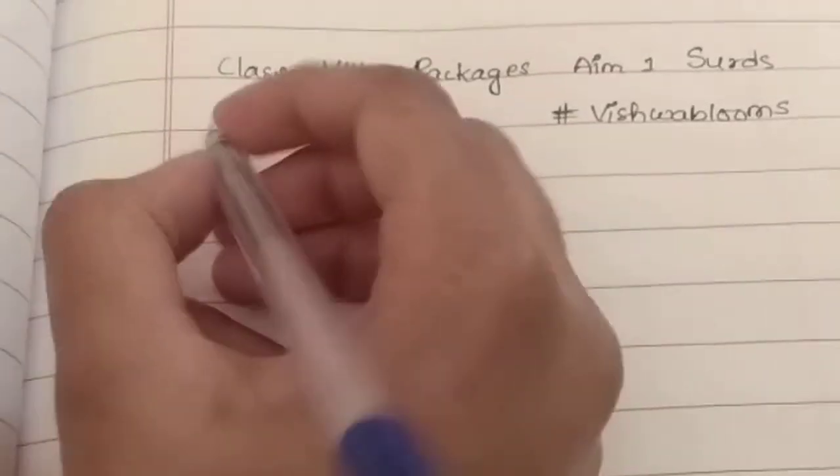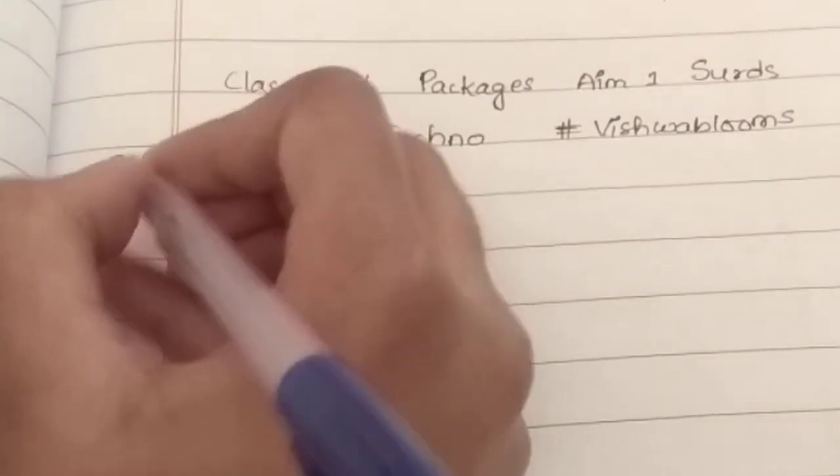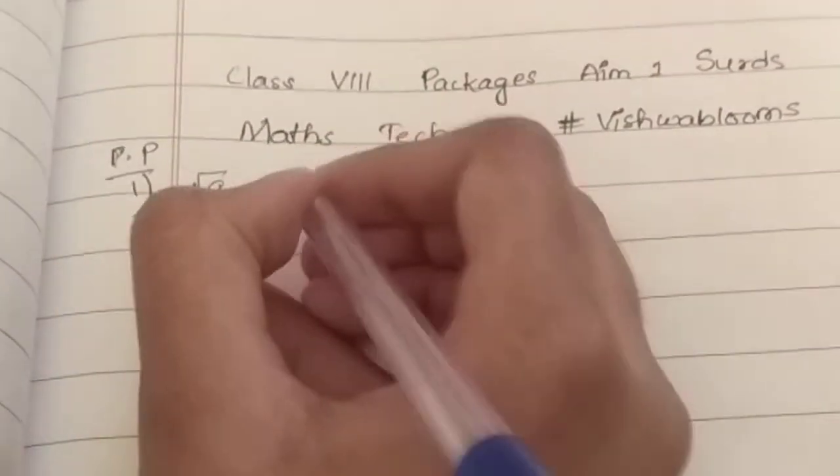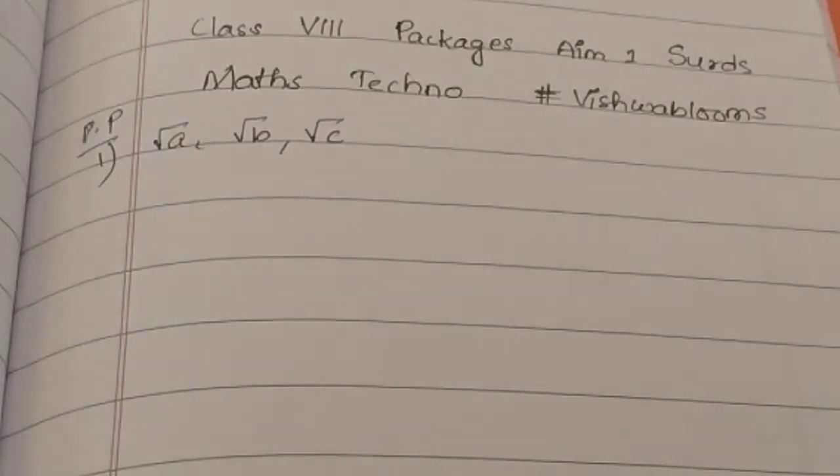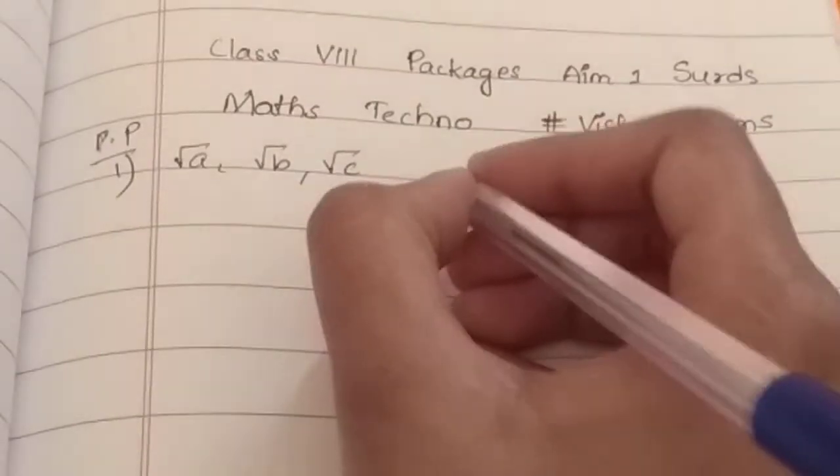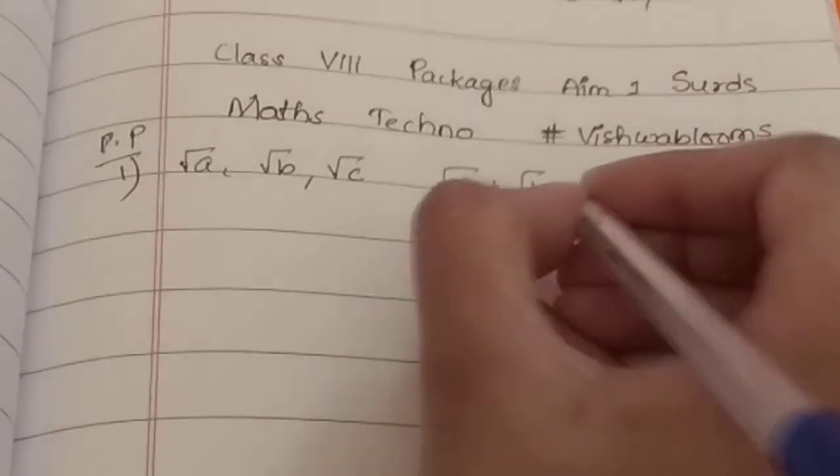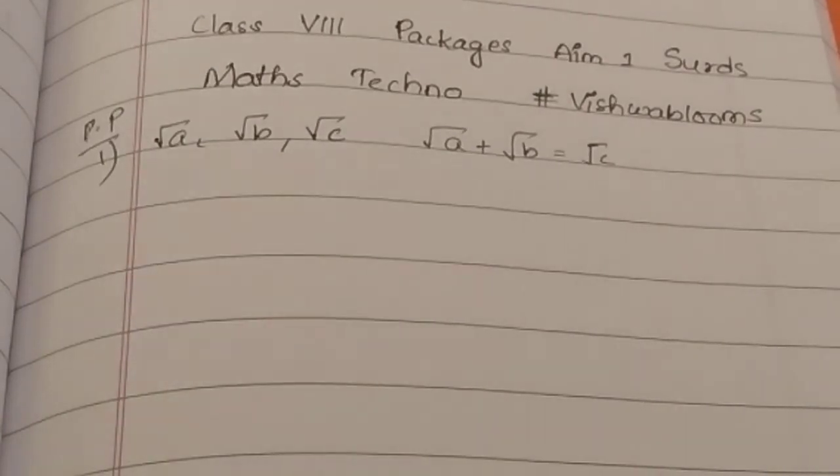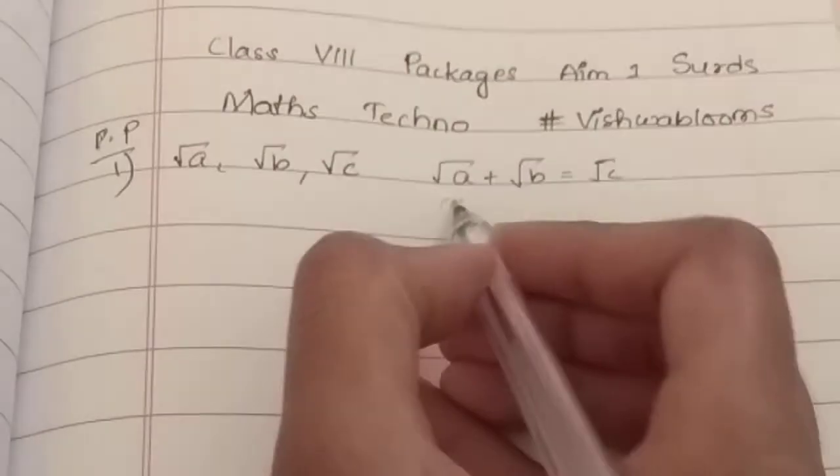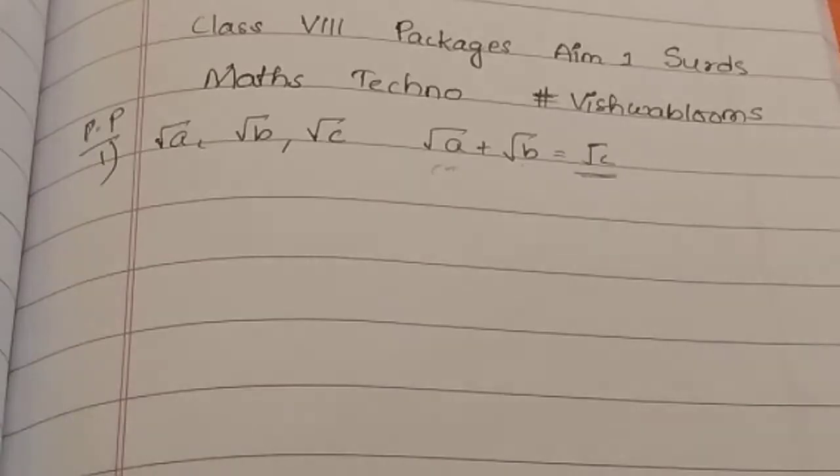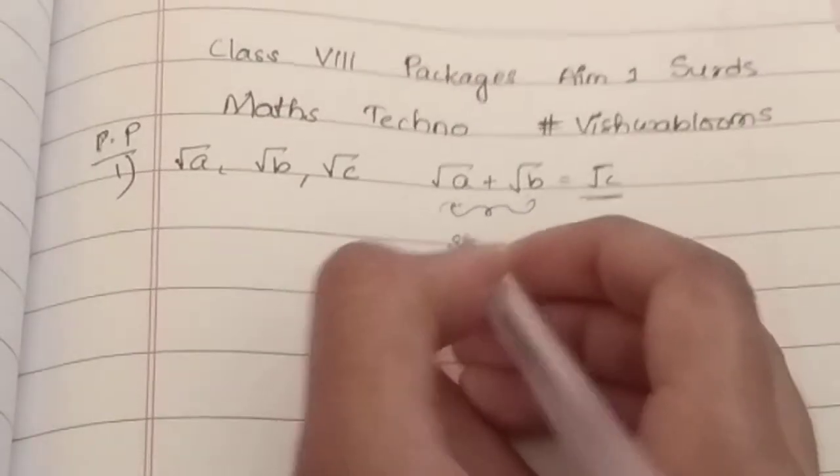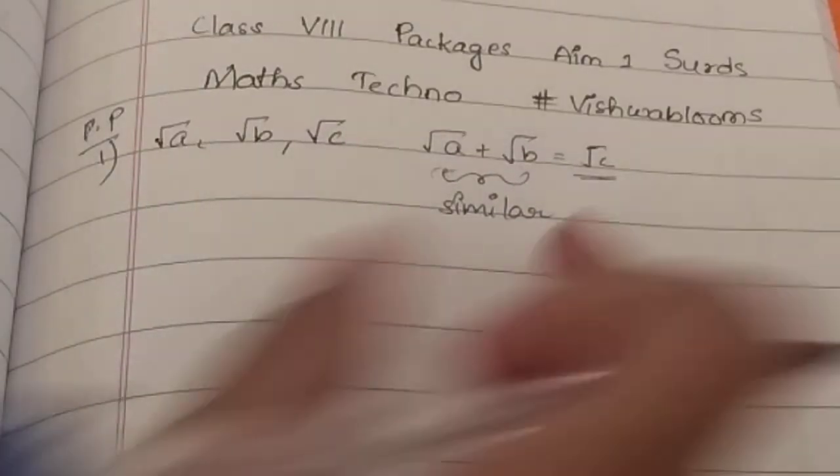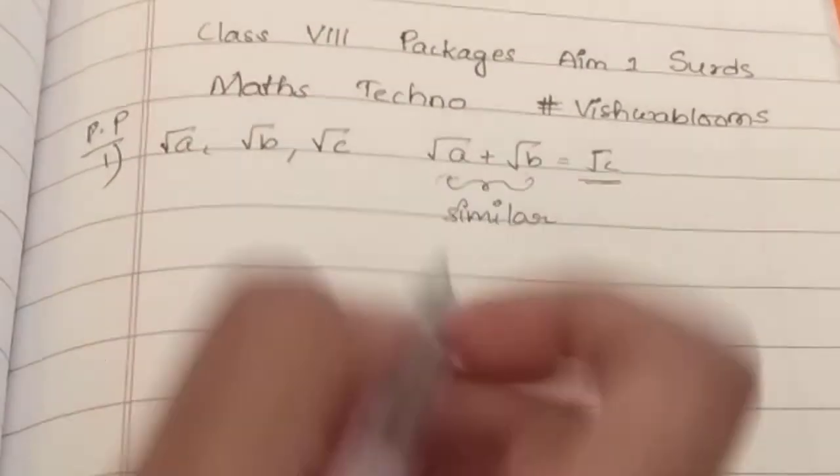Let's begin with packages, Pearl Package. First question is, if the surds root A, root B, and root C are surds such that root A plus root B equals root C, then root A and root B are obviously similar, because when you are adding up two surds and getting another surd, these two surds need to be similar in order to be added up. So they are similar, option B.